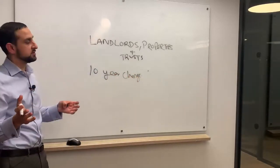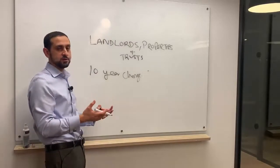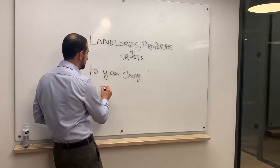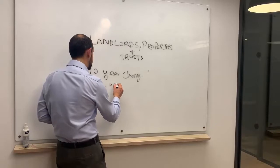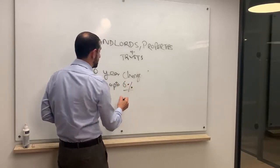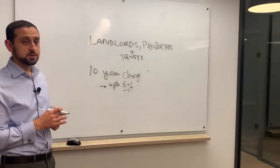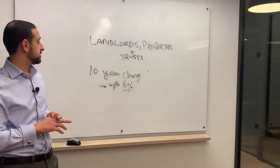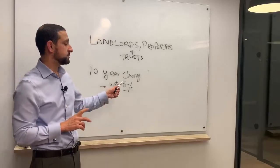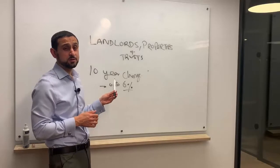Every 10 years the assets in the trust are valued and you pay a charge up to 6%. If you put properties worth say £35 million or £20 million in the trust, this can cost you 6%. And for that reason alone, a lot of people are now starting to close down trusts.